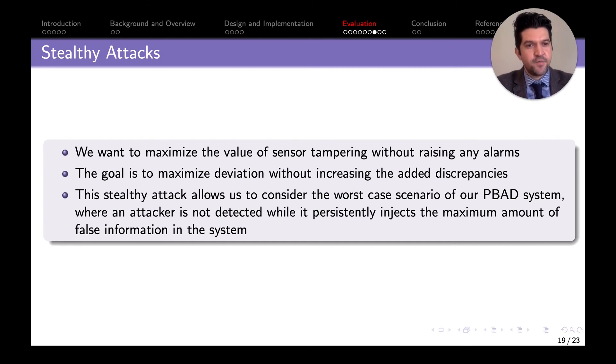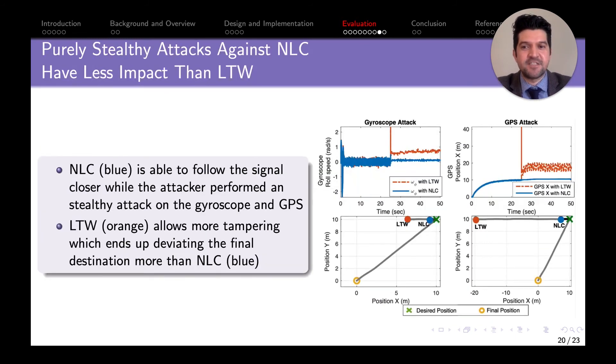For stealthy attacks, we wanted to create a powerful attacker able to attack the system while remaining undetected and affecting the system as much as possible. We found that our approach is able to discourage these types of attacks such that the system doesn't get affected as much because the CUSUM algorithm keeps track of all discrepancies against a time window algorithm. With smaller attacks, it would take longer to detect. As we can see at the bottom, once the attack is launched, we're able to stay within the boundaries longer. The attack is able to manipulate the position less with our method than with linear models.